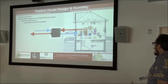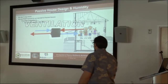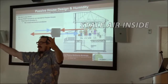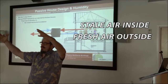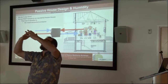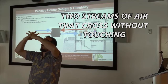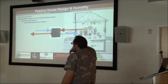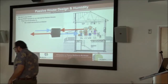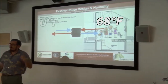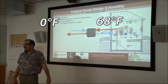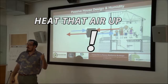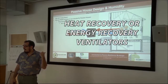People got to breathe, so we have to stick in some type of ventilation. We want to use a heat recovery device — I've got stale air inside and fresh air outside. It comes into this magic little box where two streams of air cross without touching and exchange their heat. In passive house, if you're using a high enough efficiency unit and it's 68 degrees inside and zero degrees outside, instead of heating all that incoming air from zero to 68, you go through one of these heat recovery or energy recovery ventilators.